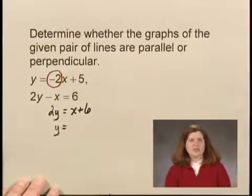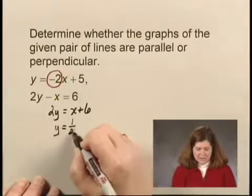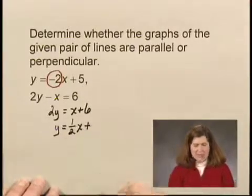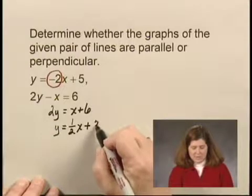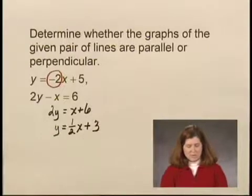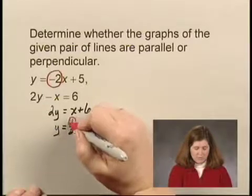x divided by 2 is the same as 1 half x. 6 divided by 2 is 3. So the slope of the second line is 1 half.